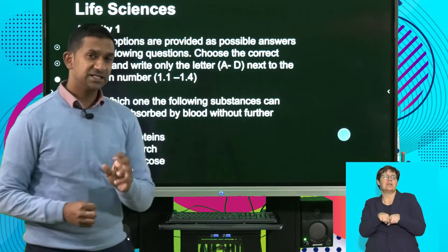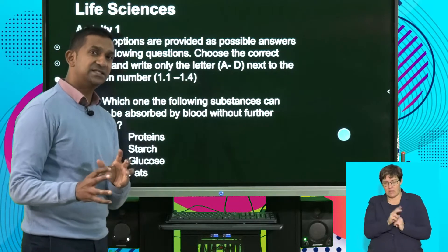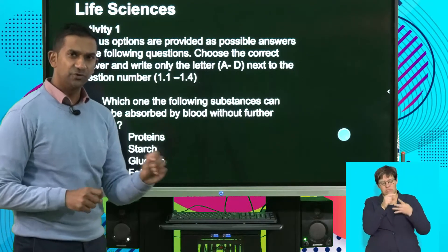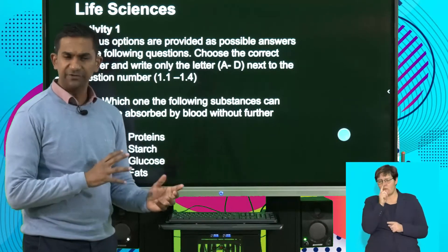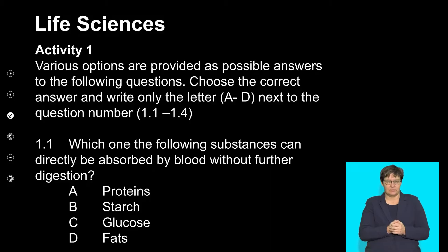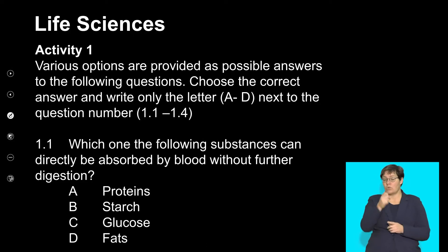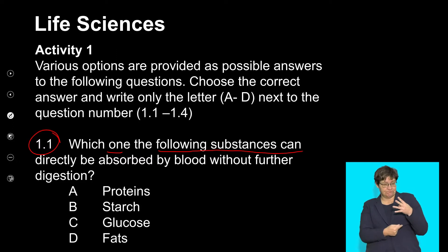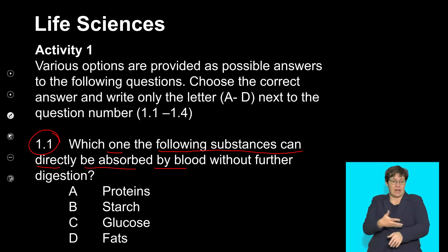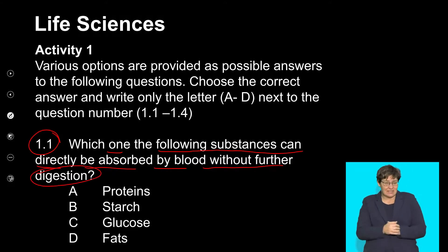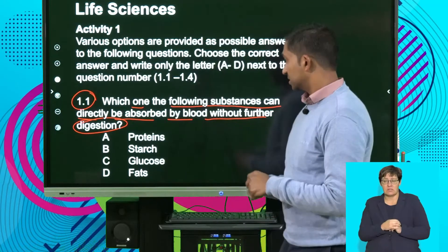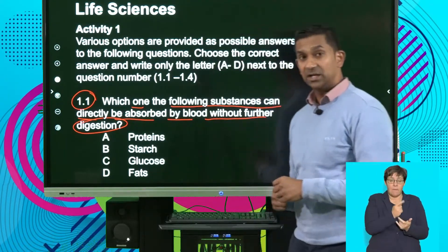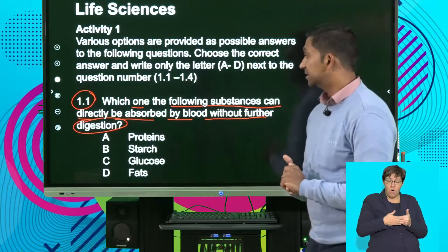Before we wrap up this section, let's test the waters. Let's try applying some of our understanding to a few multiple choice questions. Question 1.1: Which of the following substances can directly be absorbed by the blood without further digestion? It's quite a tricky question because it refers to a substance that can be absorbed directly without any further breakdown.